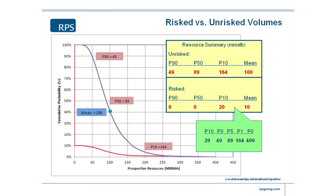What we normally do is we plot the two curves together, so we get a curve like that. The blue line, if it's an expression, this is what I would expect to find if it's discovered, which is useful because if I'm going to value this potential success, I need to know what's in the ground when I find it. You don't find what's called a risk barrel, so I either find nothing or I find the field.